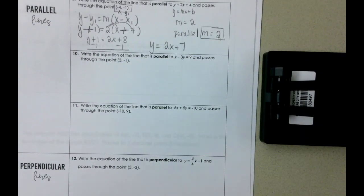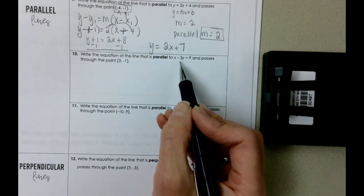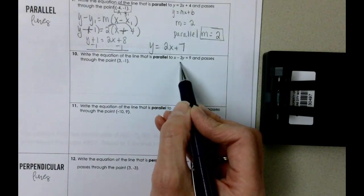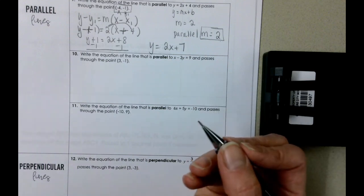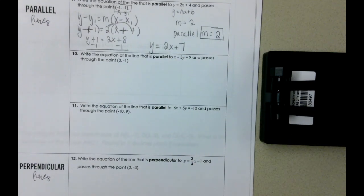So when we look at our second problem here on number 10, we're still finding the equation of the line that's parallel and passes through that point, but this time we have to take this equation that is in standard form and we need to rewrite it in slope intercept form.